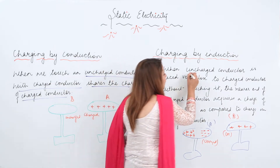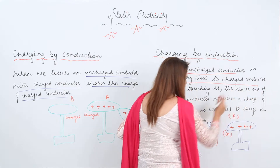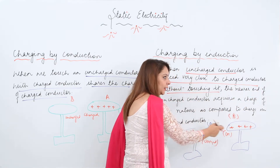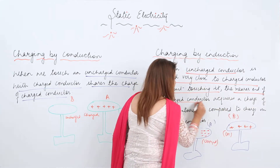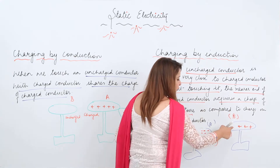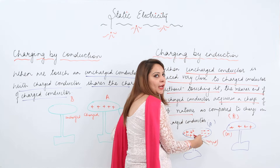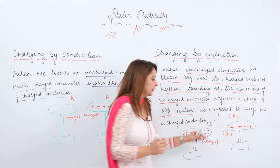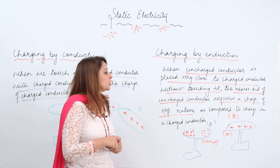When an uncharged conductor is placed close to a charged conductor without touching, the nearer end of the uncharged conductor acquires a charge of opposite nature to that of the charged conductor — if the charged body is positive, the nearer end becomes negative; if it were negative, the nearer end would become positive. This is what charging by induction is.